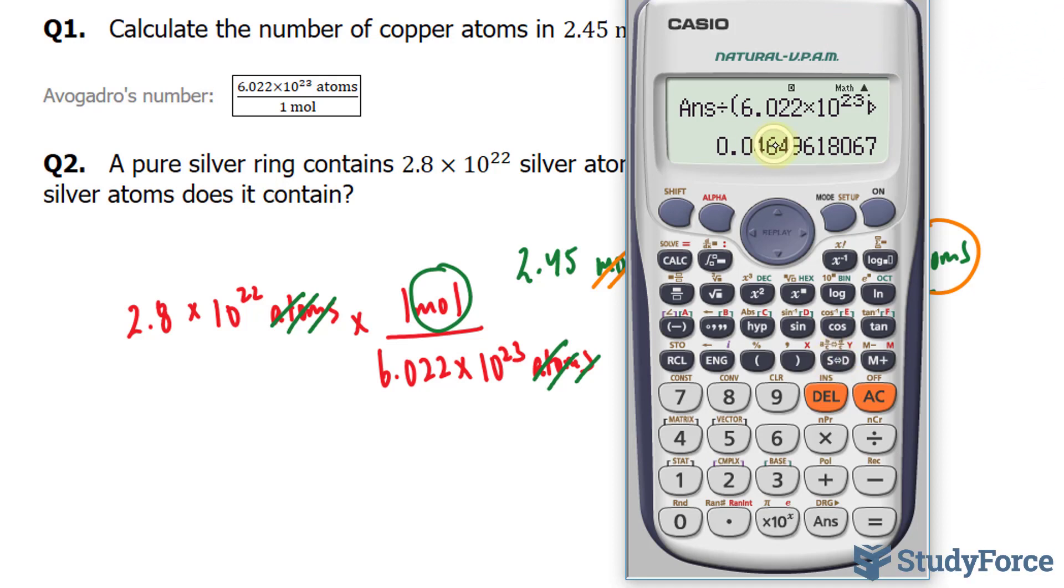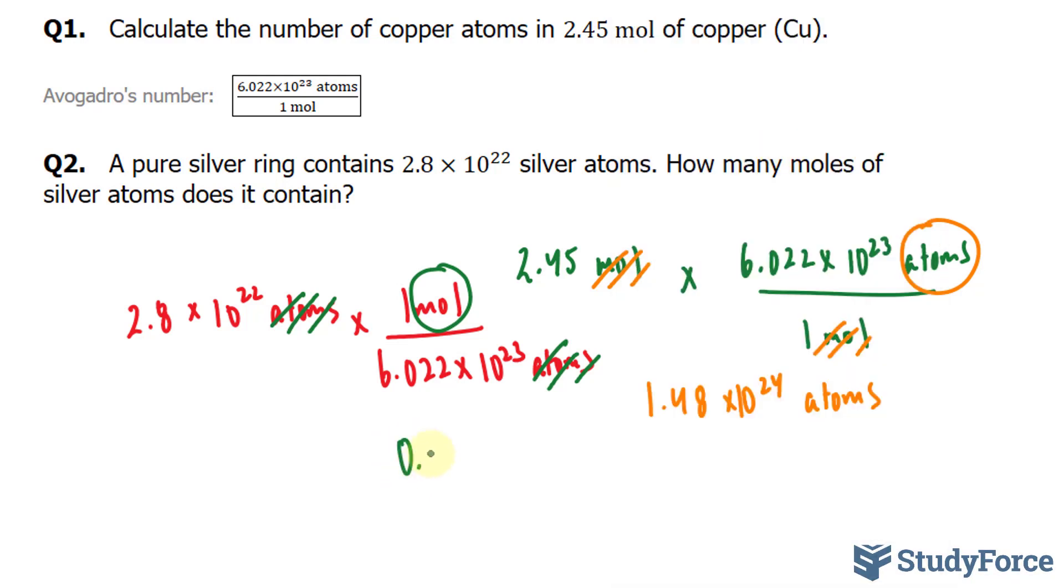Everything after this 6 is insignificant. This 4 is significant. That 6 is significant. And the number after the 6, the first discarded number, is less than 5, so we won't even round up. 0.046 moles of silver.